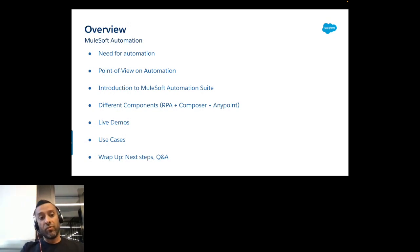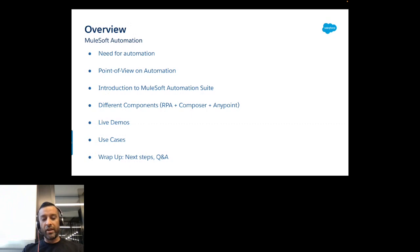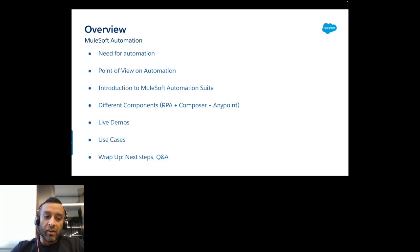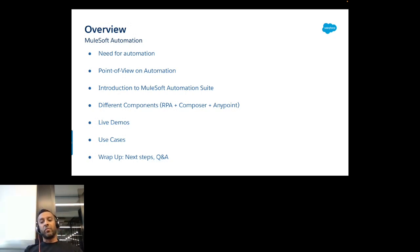The capabilities we'll look at are RPA, Composer, and AnyPoint. We'll dive into an architecture diagram to see how these components interact with each other, plus a couple of live demos — I think three planned for today. We'll also cover use cases, since I've been presenting this to many prospects and customers since August last year.